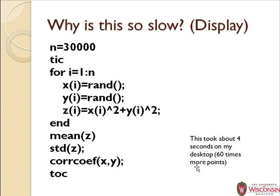So why is this slow? The main reason is because I didn't have semicolons at the end of those three lines. Every time I saved the value of x, y, or z, it was displaying the entire vector to the screen. Display is notoriously slow, so you don't want to do that — put semicolons there. Just adding semicolons allowed me to go from 500 to 30,000 points and it actually took a little less time, going from 5 seconds down to 4. So this is roughly 60 times faster. Use semicolons until you want to see the output.